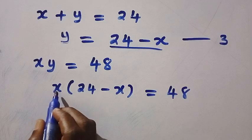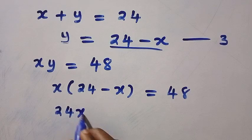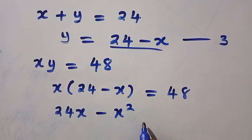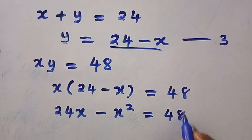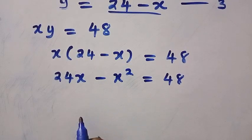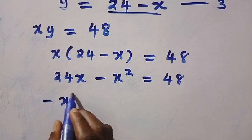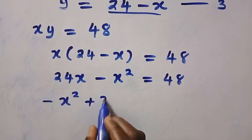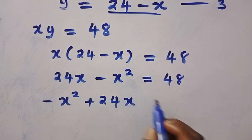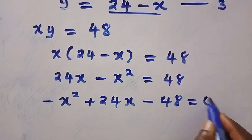By expanding this with X, we have X multiplied by 24, which gives us 24X, minus X multiplied by X, which gives us X squared, equals 48. From here, we do the arrangement: starting with minus X squared, then plus 24X, and taking 48 to this side as well — so minus 48 equals 0.